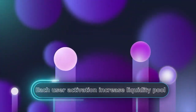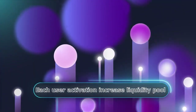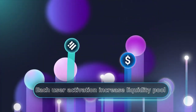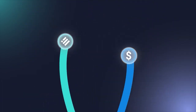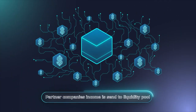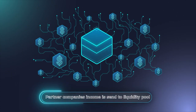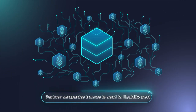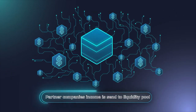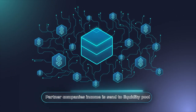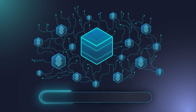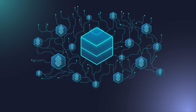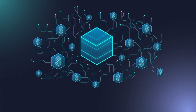Each time a user makes an activation with positioning in the tree, a portion of the funds goes to the DPNM token liquidity pool. Part of the income from partner companies that cooperate with the project is also sent to the liquidity pool. These are cryptocurrency exchanges, cryptocurrency wallets, and this list is constantly expanding.